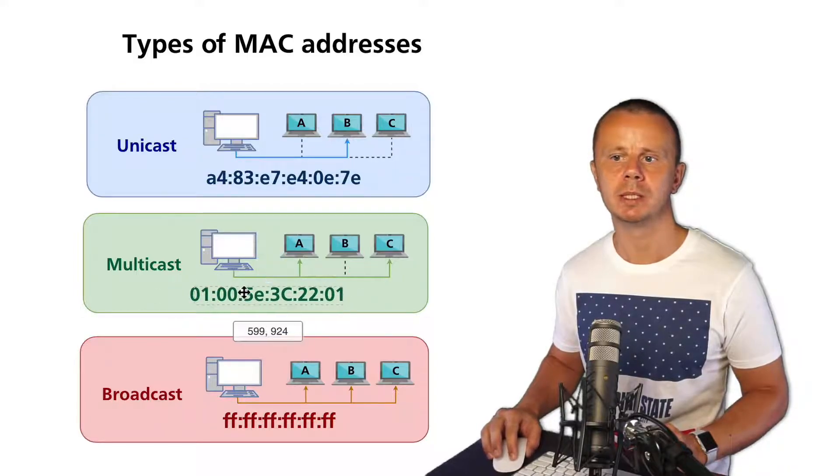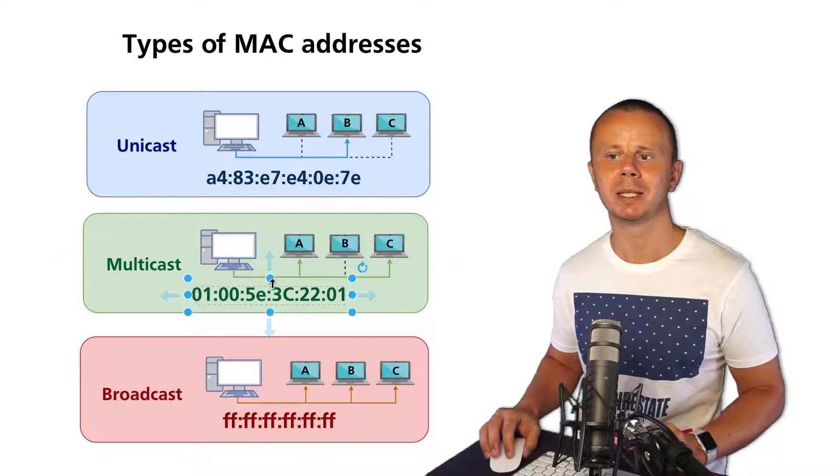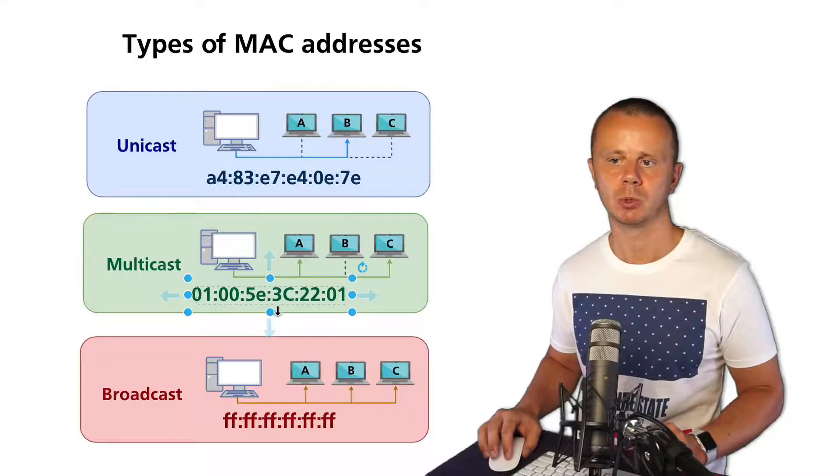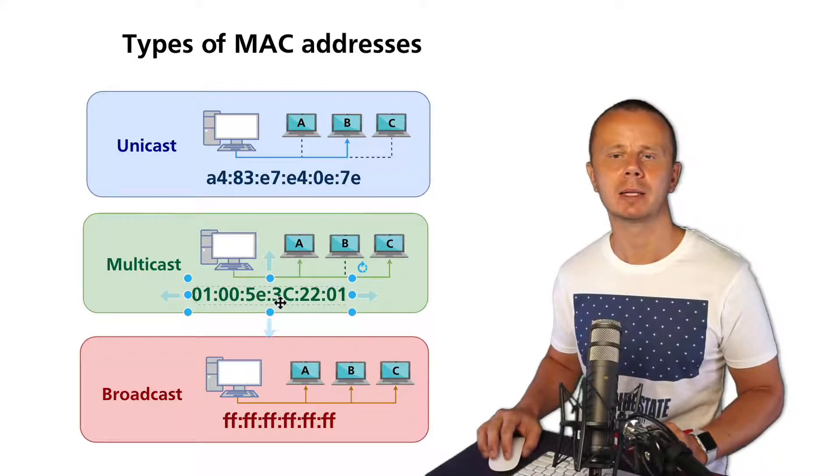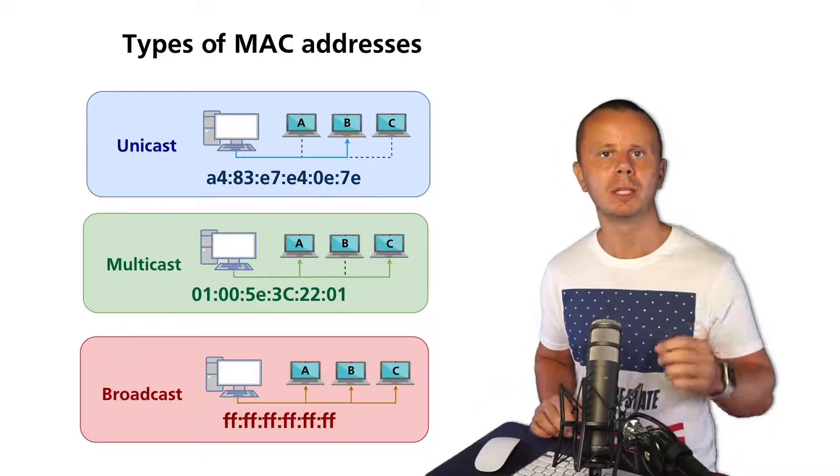Here it is. It always starts with 01:00:5E, and the first bit in this second section is always zero. So here is an example of a multicast MAC address.